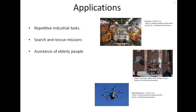The next application is assistance of elderly people. In western countries there are more old people than young, and they need assistance. Socially interactive robots can talk and interact with old people to support their mental health. If people are physically disabled, robots can also assist with cleaning, bringing food, and feeding.